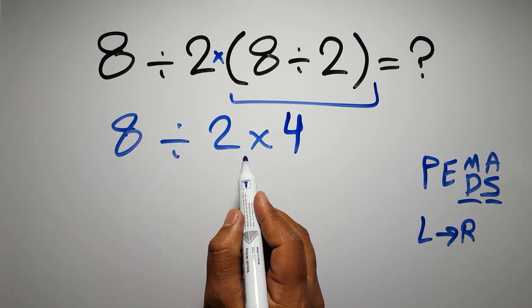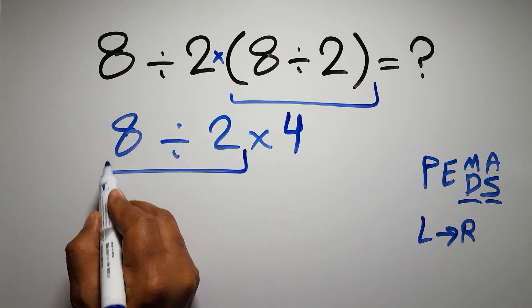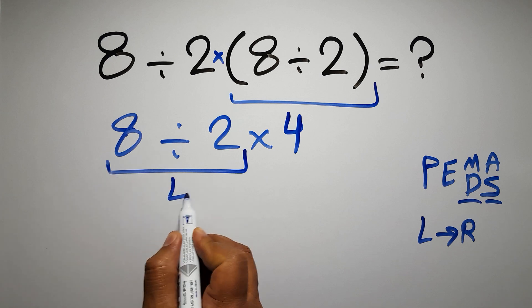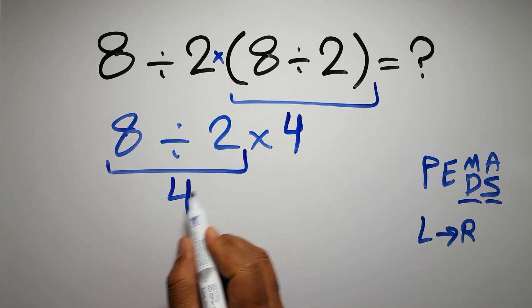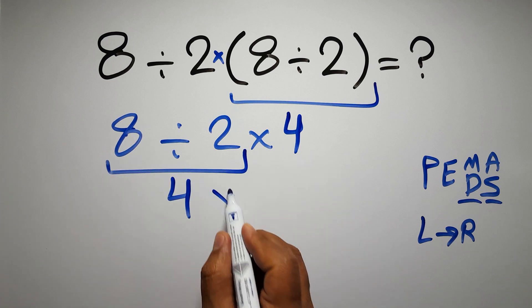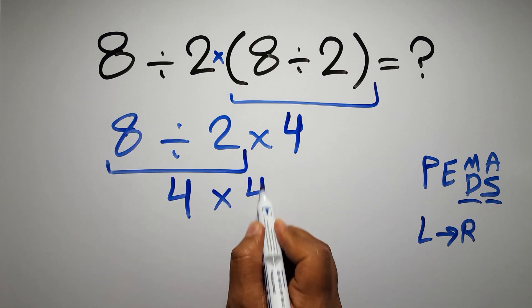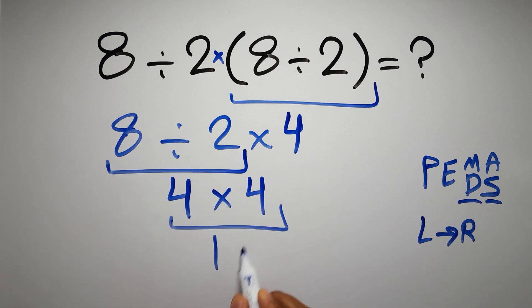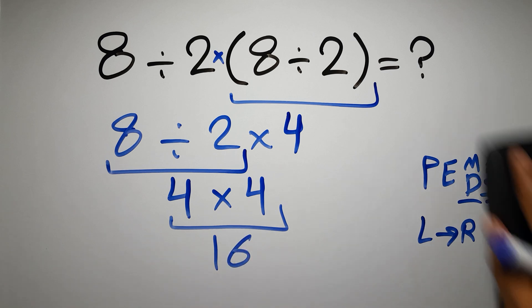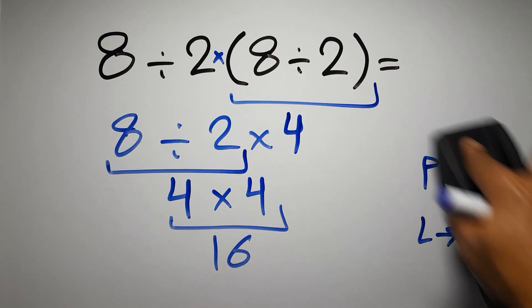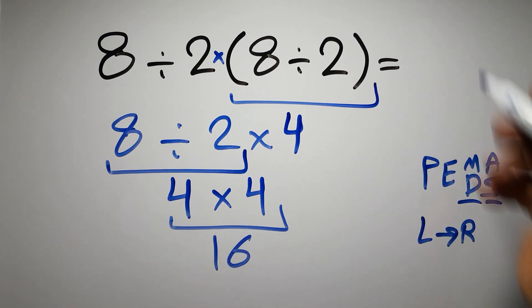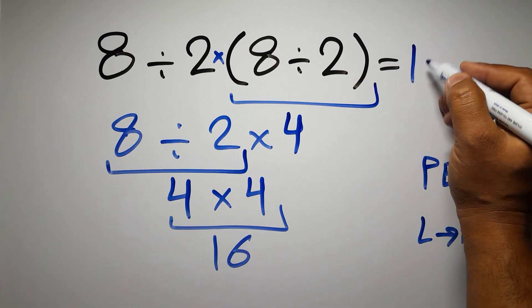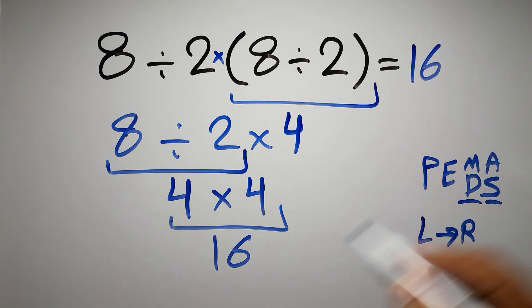8 divided by 2 gives us 4, and 4 times 4 is 16. This is our final answer to this problem. The correct answer is 16.